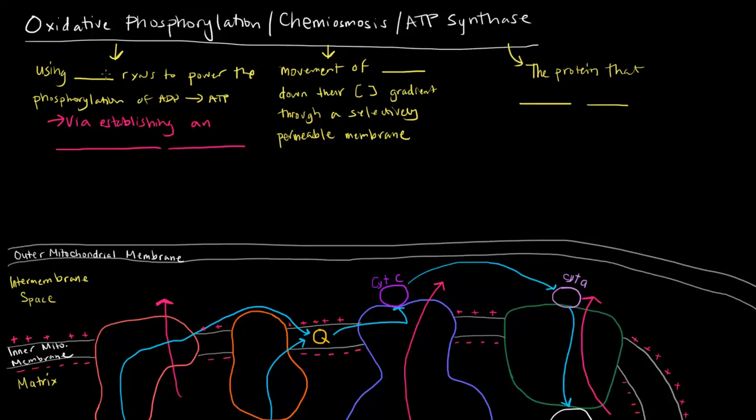In this video, I want to wrap up the electron transport chain by talking about oxidative phosphorylation, chemiosmosis, and ATP synthase, and sort of drawing out the complexes themselves.